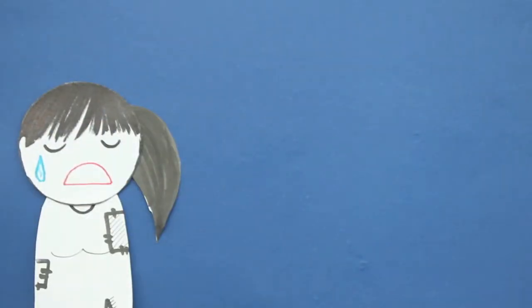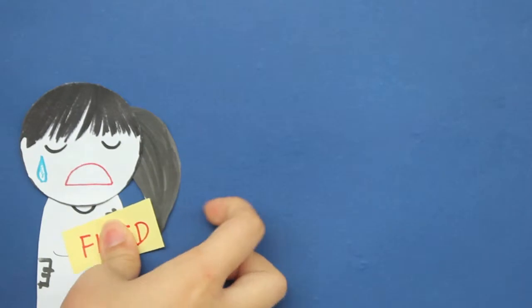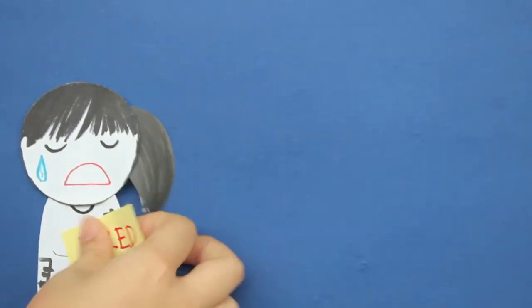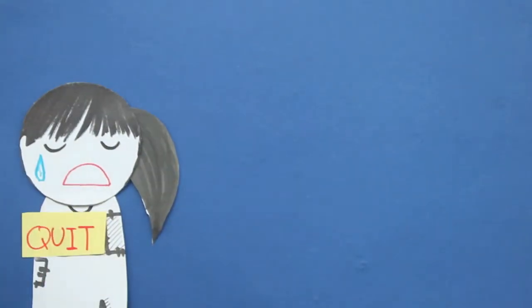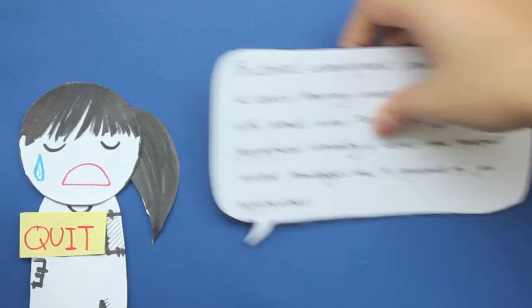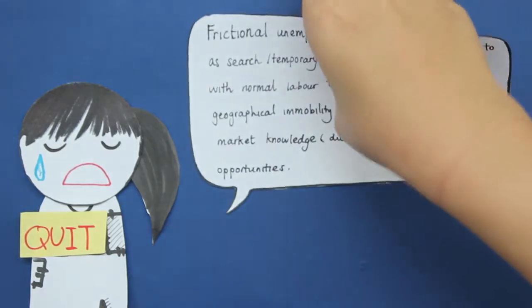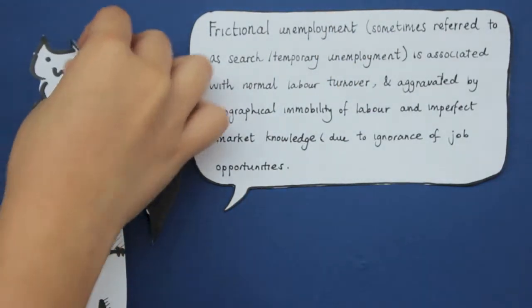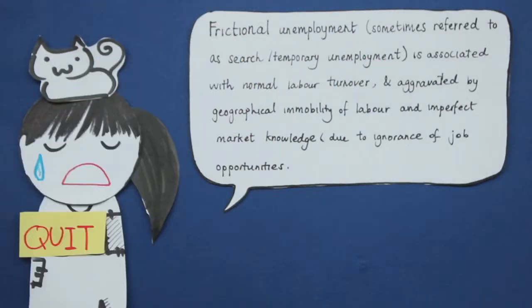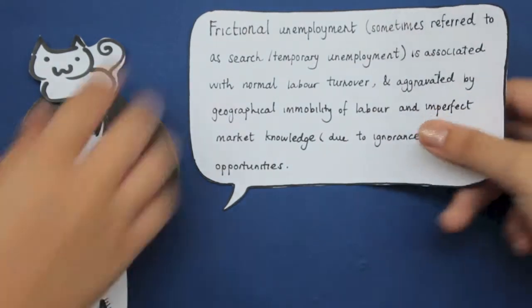As for Sally, she quit her job. So this is a form of frictional unemployment, which is associated with normal labour turnover and aggravated by geographical immobility of labour and imperfect market knowledge.